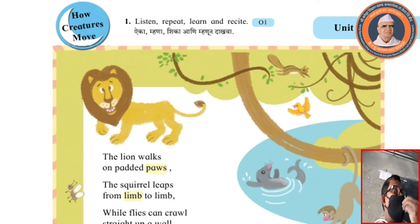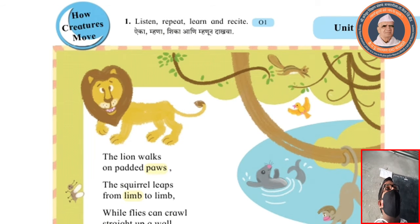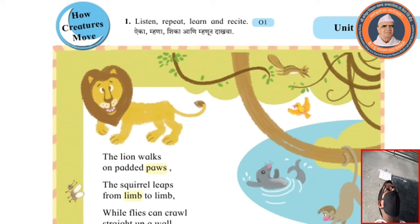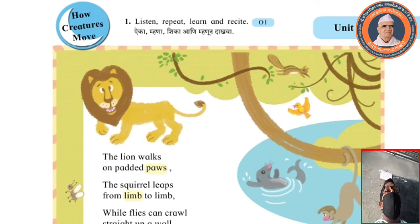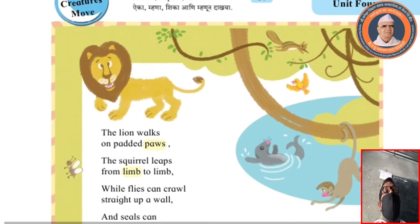We are going to learn today a new poem. The name of the new poem is 'How Creatures Move' — Prani Kashyayal Chalkathar. Listen, repeat, learn and recite — Aika Mana Ashika Ni Manunda Kwa.